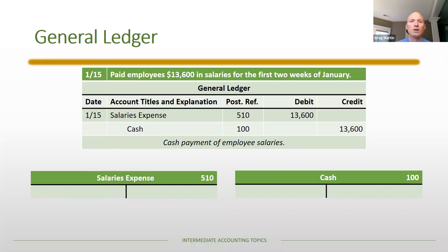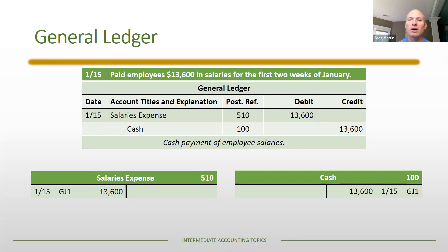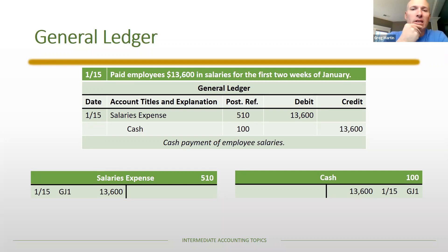Now salaries expense — a little different, because it's an income statement account, not a balance sheet account. It's further down in the T-account list, in the income statement section. But the same rule applies: debits on the left, credits on the right. It doesn't matter what type of account it is — if it's a debit it goes in the left column, if it's a credit it goes in the right column.